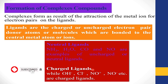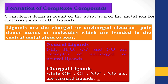Examples of charged ligands are hydroxide and chloride. Nitric oxide (NO) can exist as a neutral ligand called nitrosyl, as a cationic ligand called nitrosonium (NO+), and as an anionic ligand called nitroso (NO−). These are the examples of charged ligands.